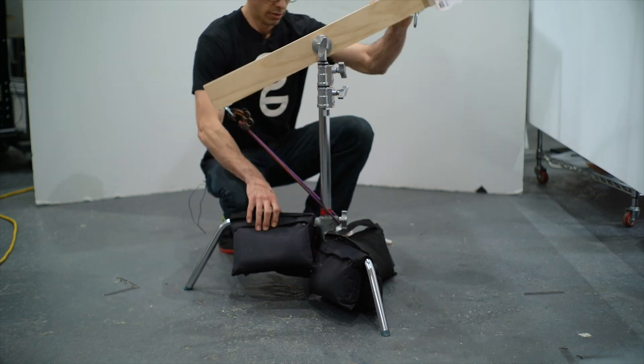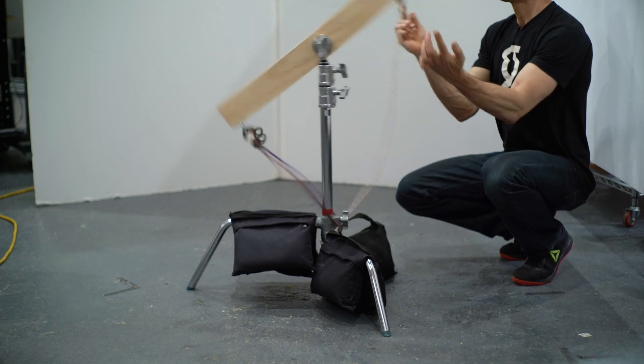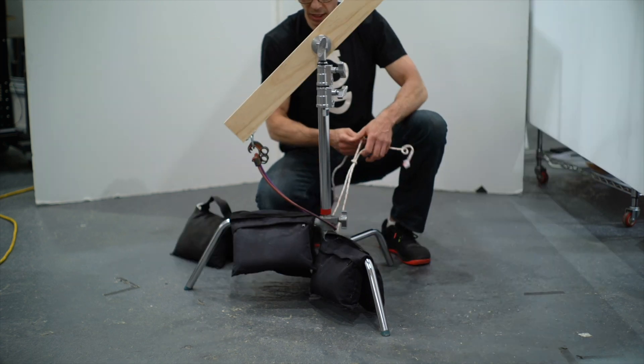Now the other thing that we need is we need this catapult to stop so it doesn't swing all the way around. If it swung all the way around, it wouldn't actually throw the liquid, it would probably just sling it around in a wide arc.